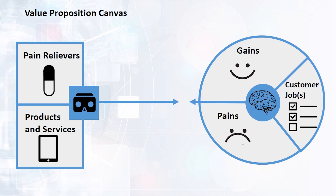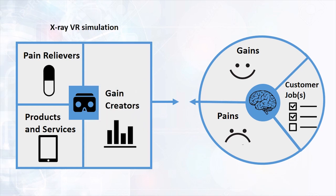We will outline the way they are gain creators, how they produce, increase or maximise outcomes and benefits that our customers expect, desire or would be surprised by. The Value Map makes explicit how our products and services relieve pains and create gains.